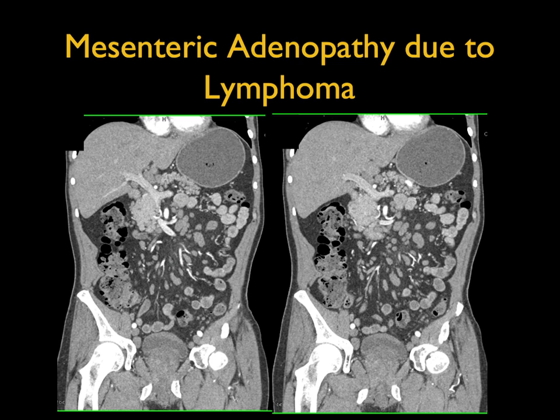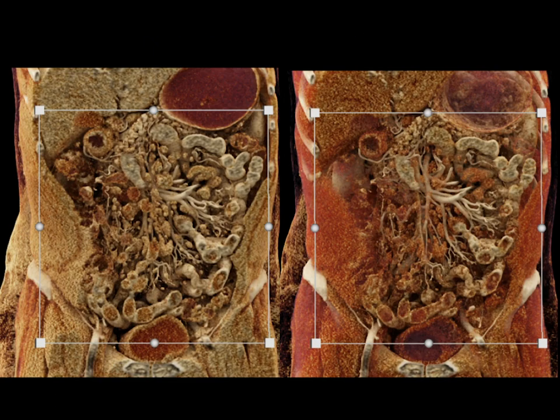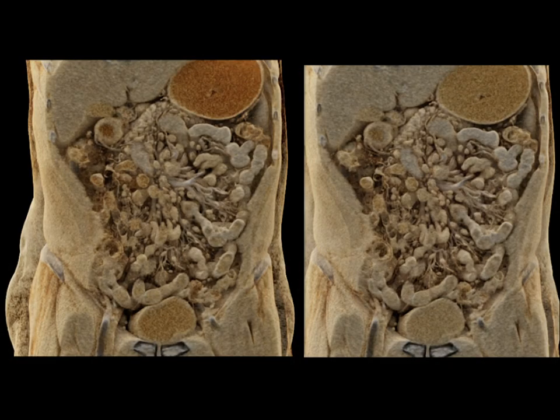Another example: mesenteric adenopathy in a patient with lymphoma. Look at the detail of the small bowel and the mesenteric nodes, nicely shown here. I'll change the rendering just a bit — look at the details. The vessels are stretched, slightly displaced, but look at all of the mesenteric nodes that you're seeing. A really nice example.